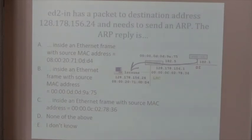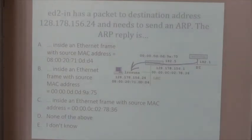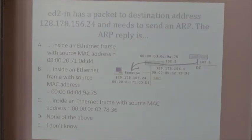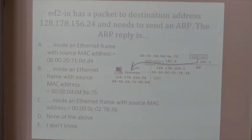The correct answer to the quiz is B. The trick is not so much about ARP itself, but about whom you are sending to. The router is sending the packet to the next hop, so it needs the MAC address of the next hop, not the MAC address of the final destination. The green and red networks are different subnets. So the router sends an ARP for the MAC address corresponding to the interface at 128.178.156.1 — that is ININR, which responds with its own MAC address. So the correct answer is B.